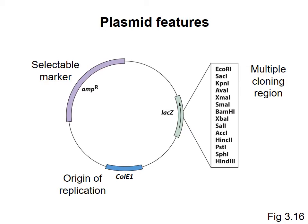Many plasmids also contain a multiple cloning region, which is a section of DNA that contains recognition sequences from many restriction endonucleases, also called restriction enzymes. These can create double-strand breaks in the DNA. Each one of the entries on this list represents a different restriction endonuclease that can cut the DNA in this region.